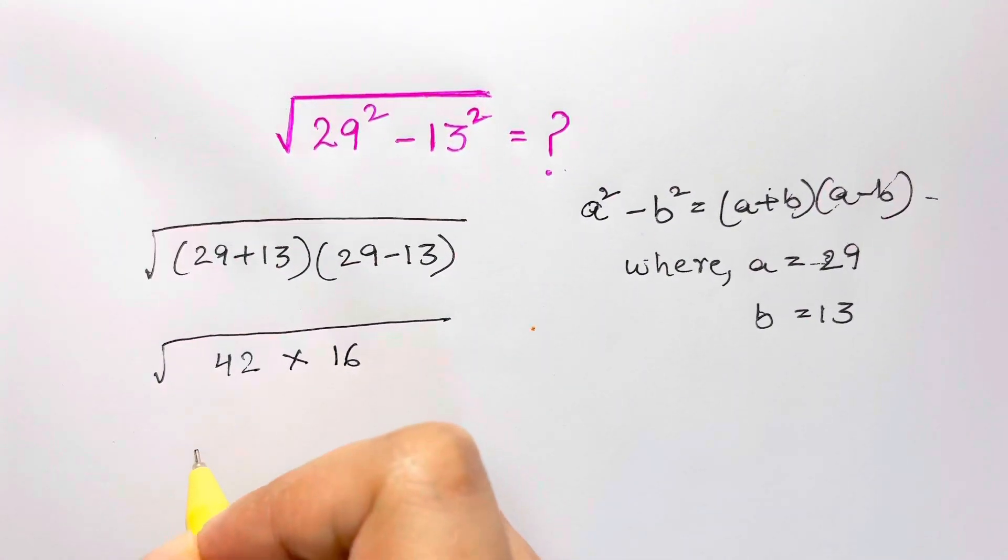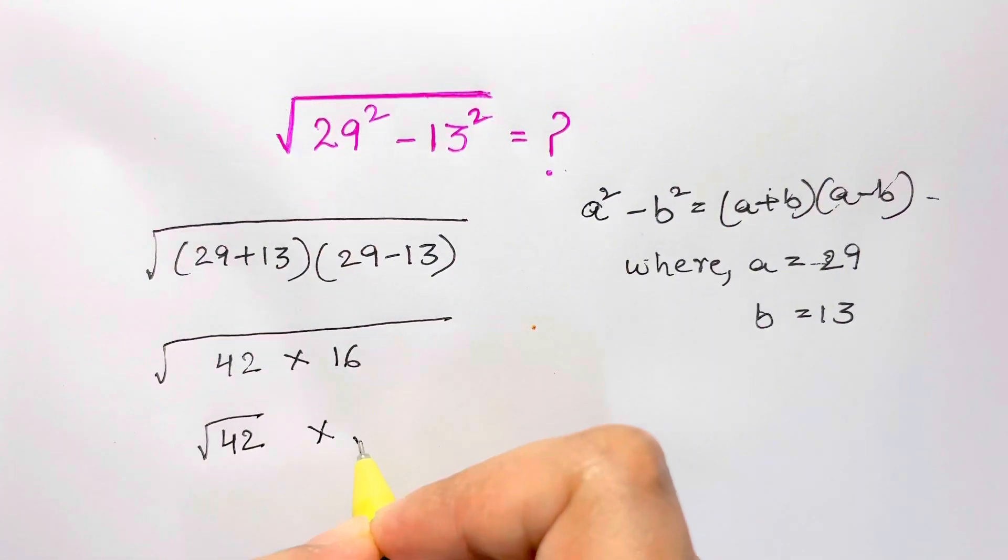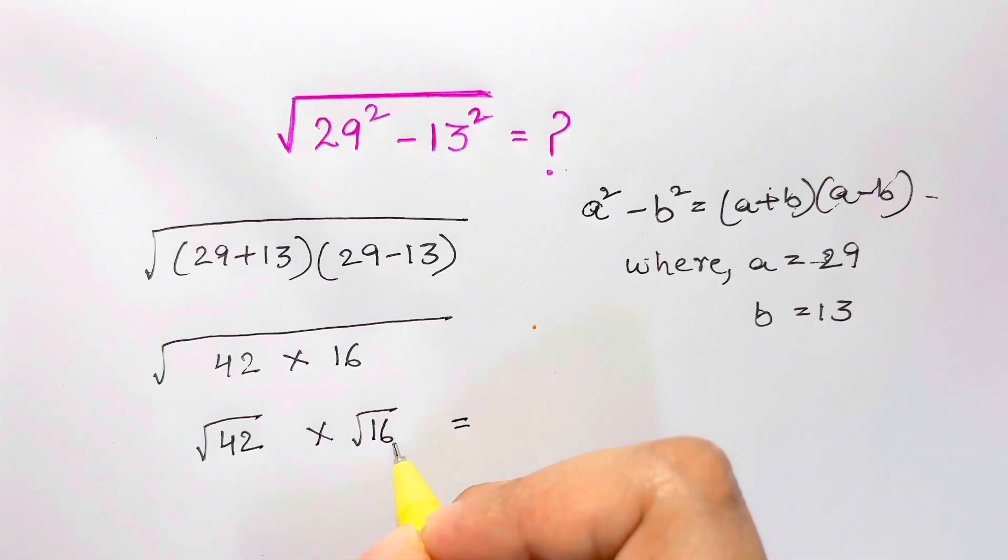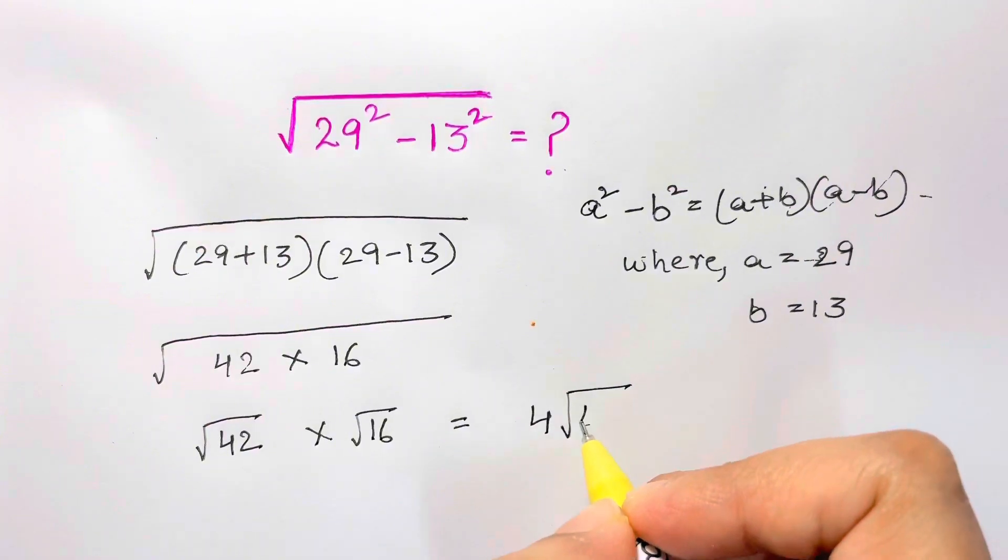We can just split them up: square root of 42 times square root of 16. And what's square root of 16? It's 4. So this can be written as 4 square root of 42.